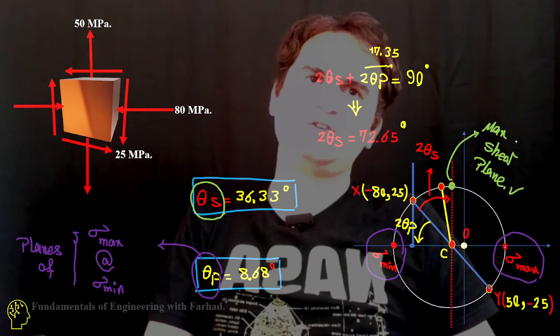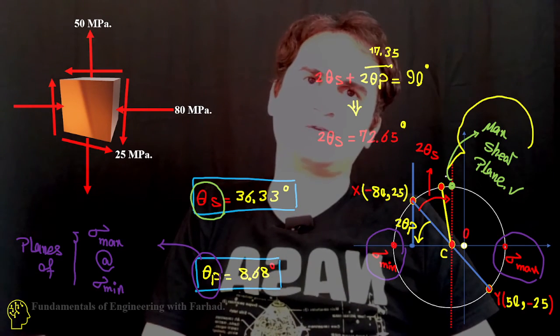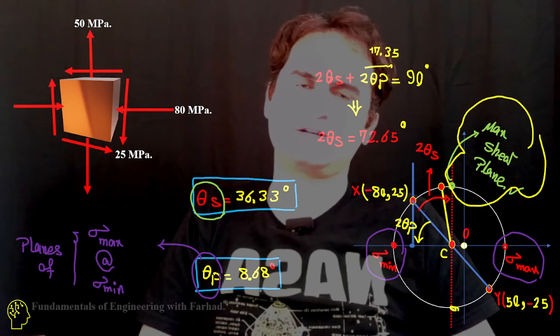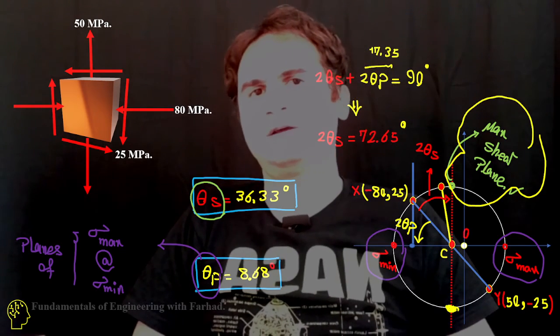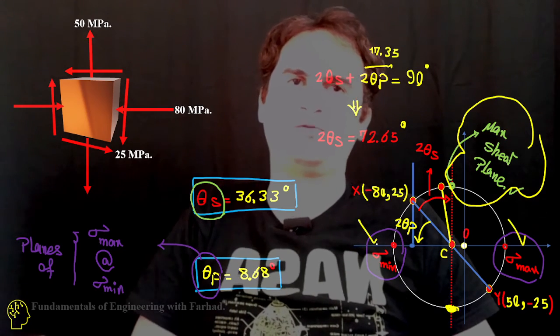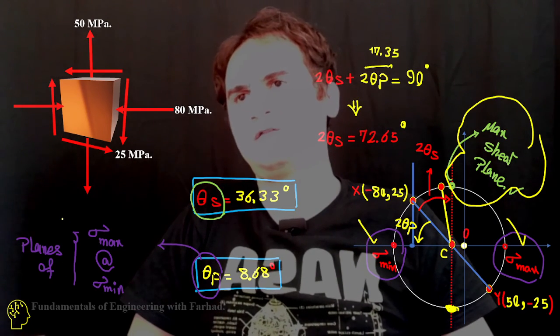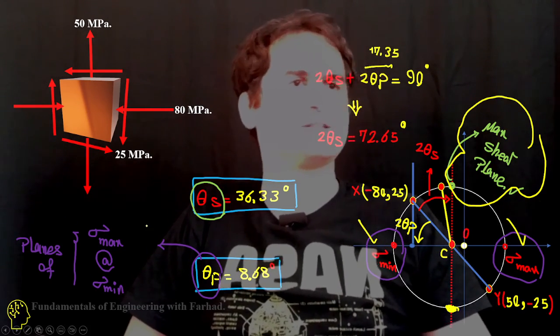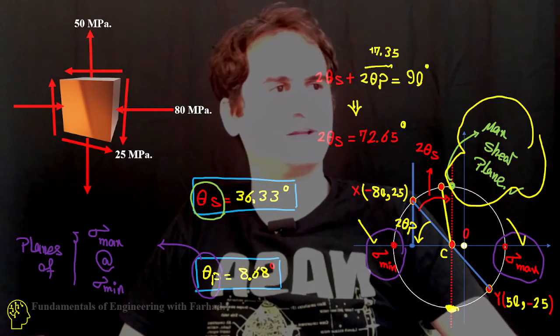The maximum shear, as you can see here, is for this point. Also you can consider the bottom one. And for theta p is the maximum plane of principal stresses, like sigma minimum and sigma maximum. Thank you.